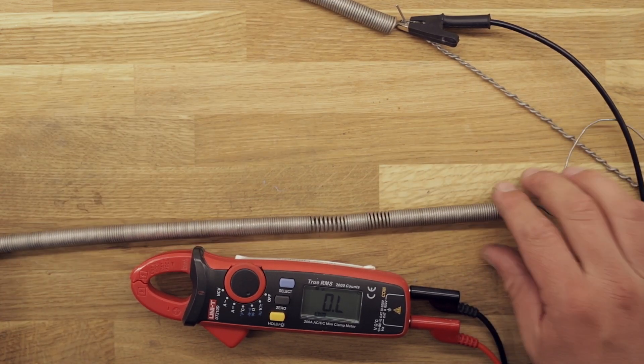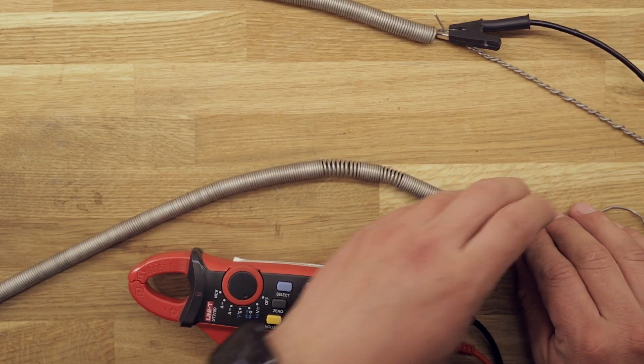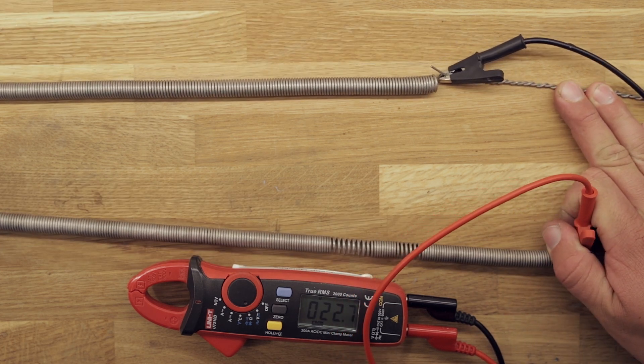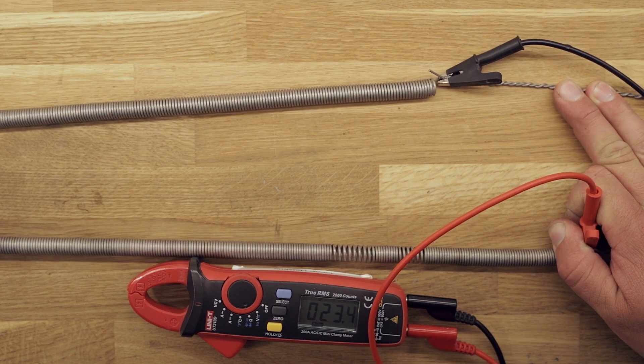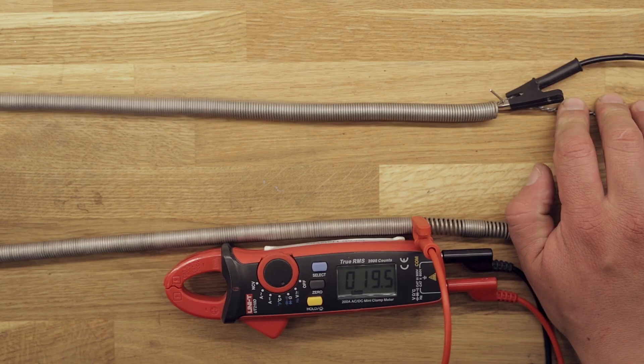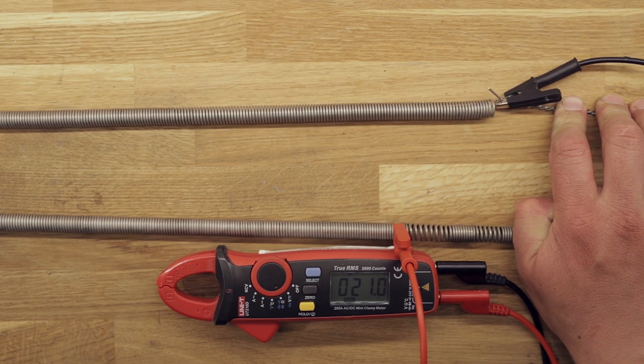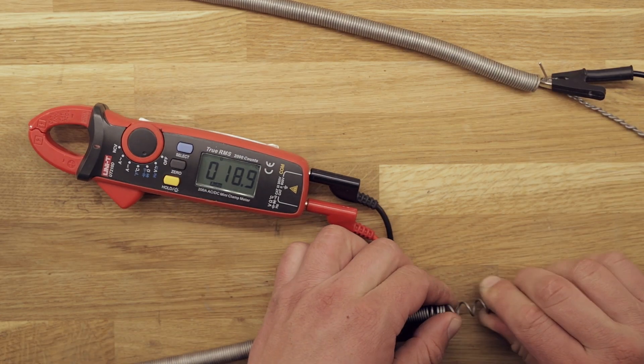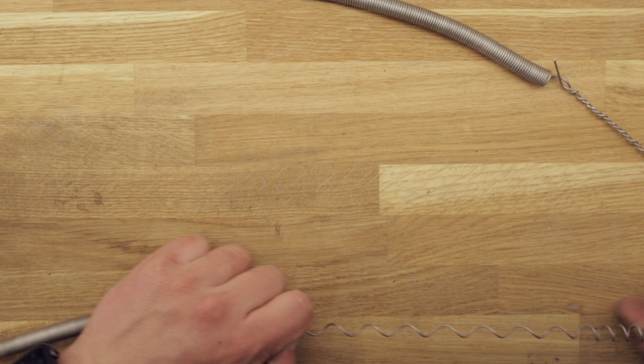It is important to remember to stretch the coil while measuring, so the windings do not touch each other and artificially lower the measured resistance. The coil measures around 23 ohms, so the probe is moved a bit closer until the desired resistance is achieved. The end of the coil can be stretched, allowing it to be twisted just like with the first end.